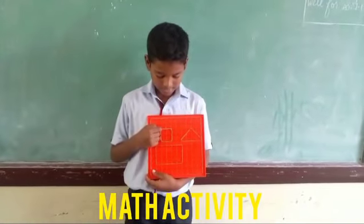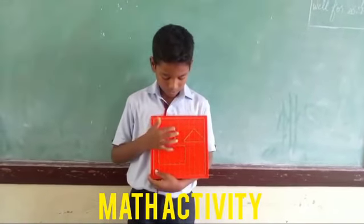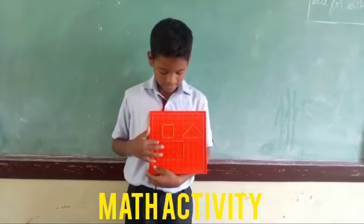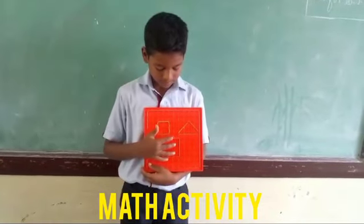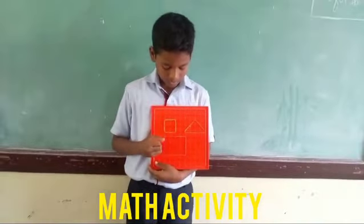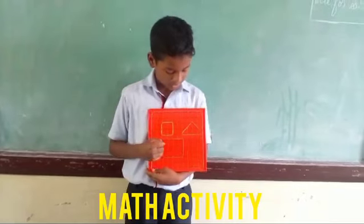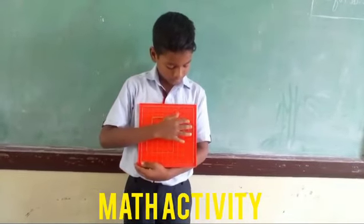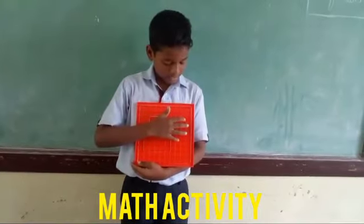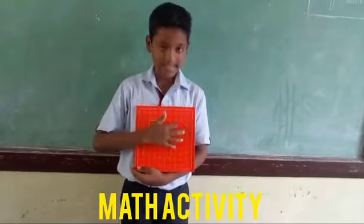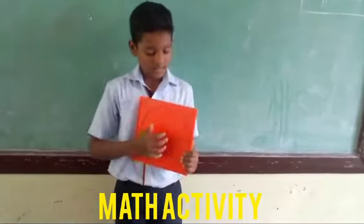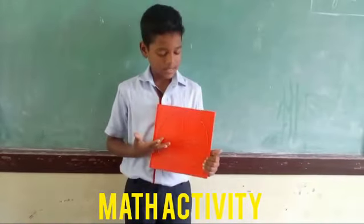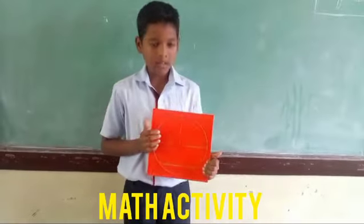This is a square — it has 4 corners and 4 sides. This is a rectangle — it has 4 corners and 4 sides. This is a triangle — it has 3 corners and 3 sides. This is a circle — it does not have sides and corners.